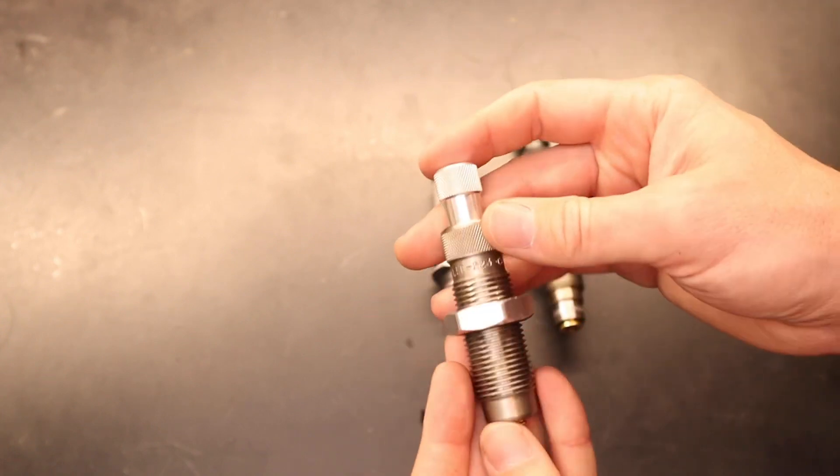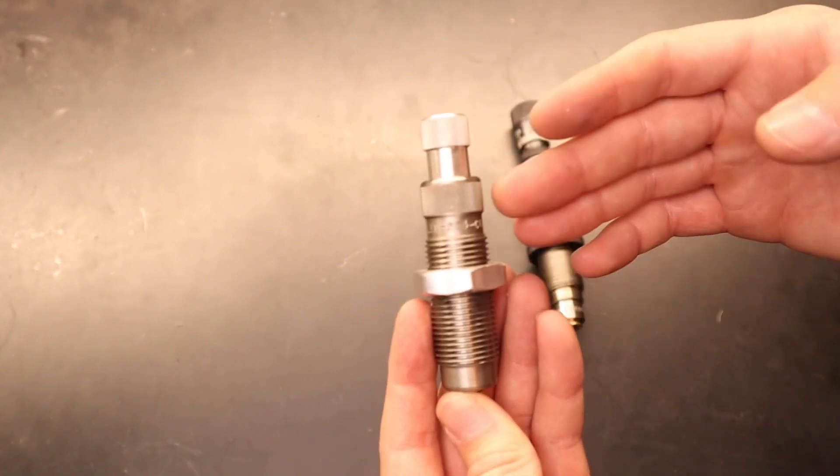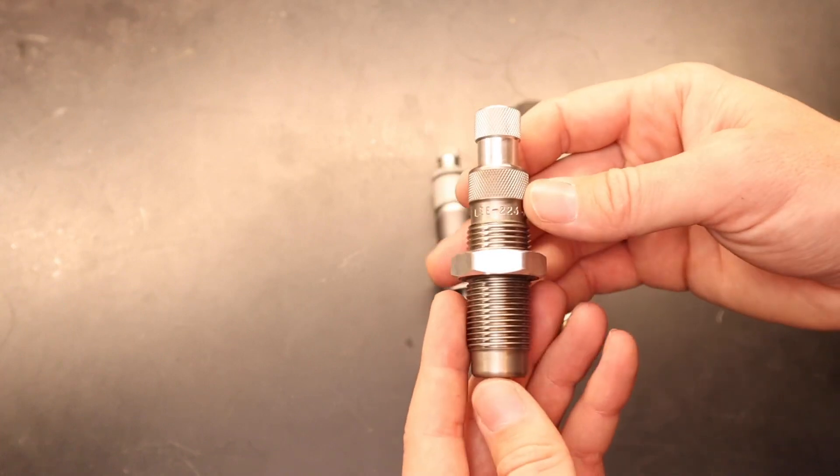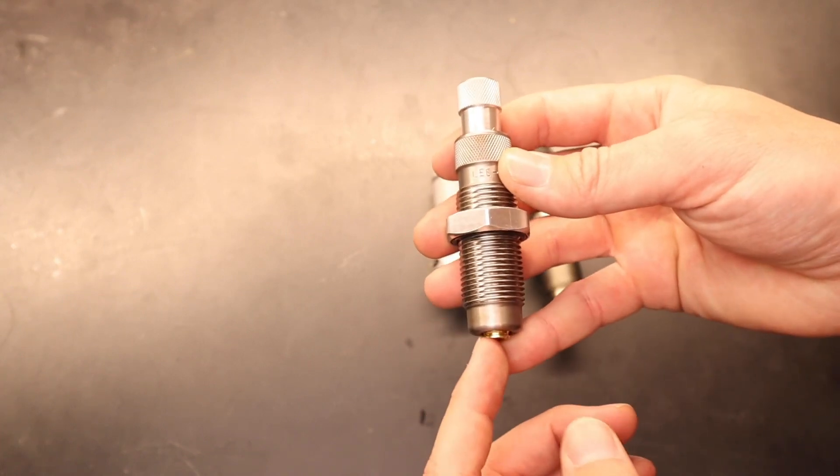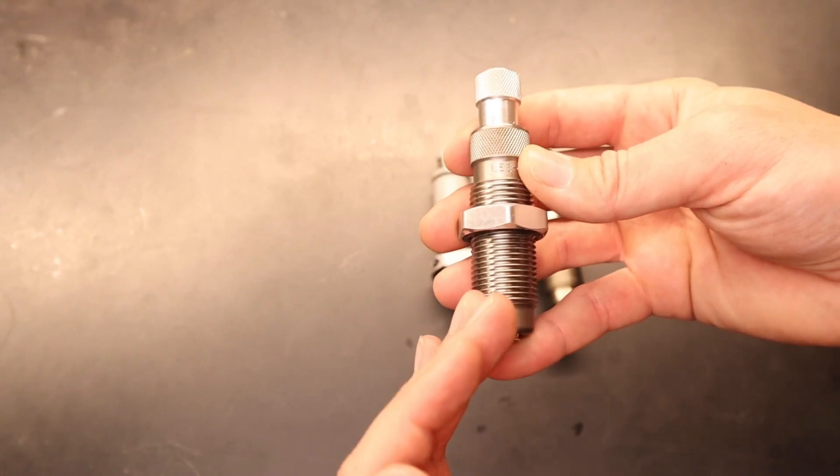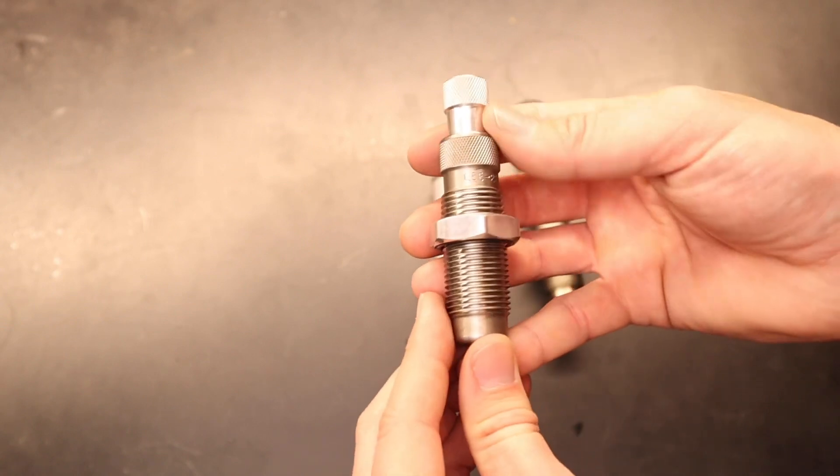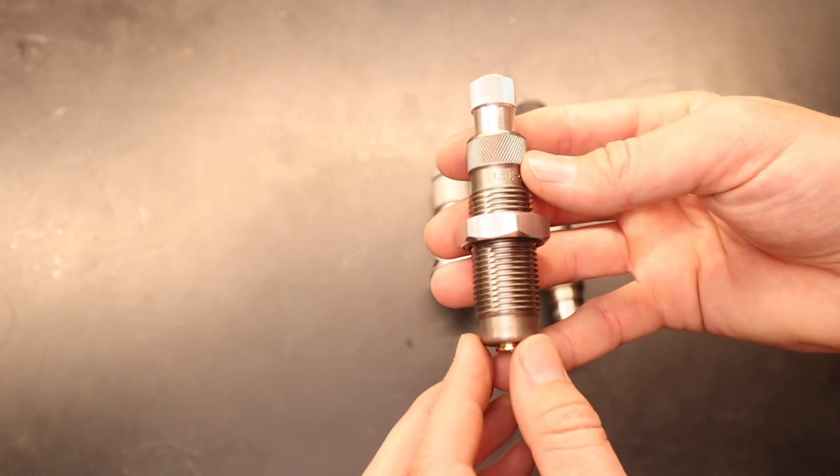I'd say the positives of this die are the cost-effectiveness and also how simple it is, but the downsides to this die is that the brass is not held straight until the very top of the stroke, so your bullet is getting seated before your brass is actually held straight.